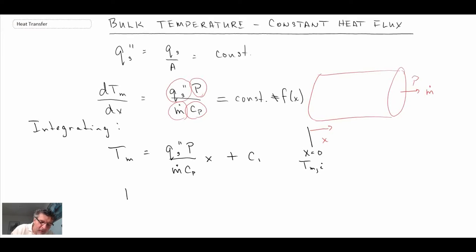And so with that boundary condition, what we can do is we can rewrite this expression in the following manner. So that becomes the temperature distribution for constant heat flux. And with that, what we're going to do, let's take that and plot it.